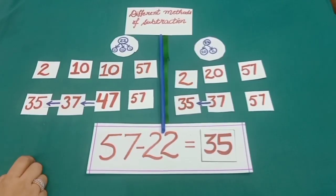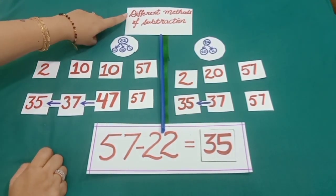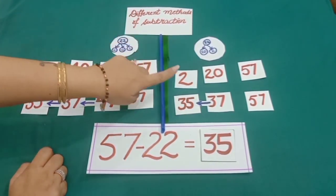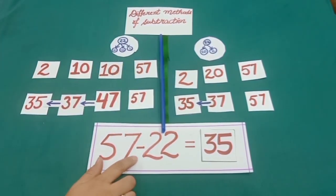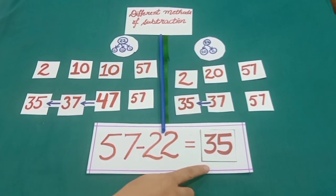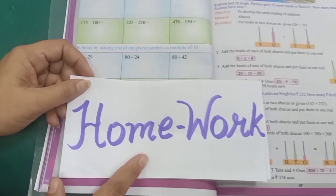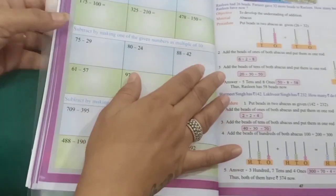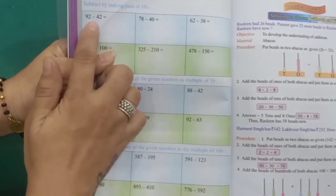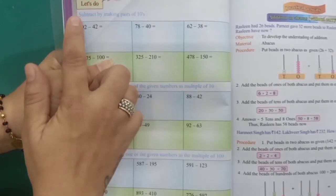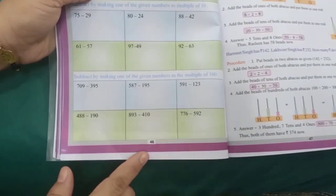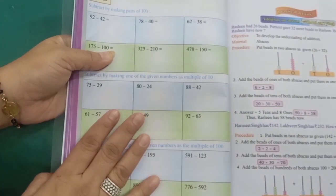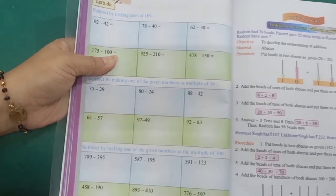So, my dear students, today we have learned different methods of subtraction, and we came to know that 57 minus 22 is equal to 35. Now, it's time for homework. Dear students, do first three parts of sum number 1, subtract by making pairs of tens, of page 46 in your notebooks. Thank you.